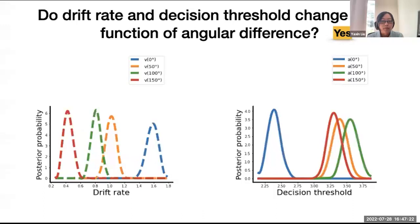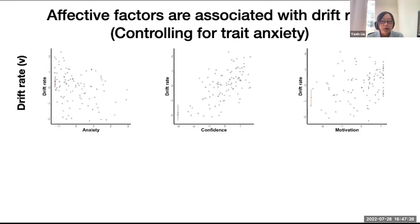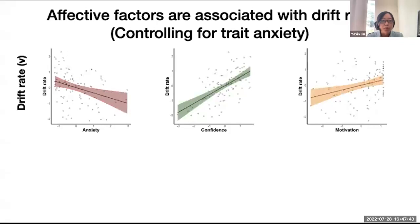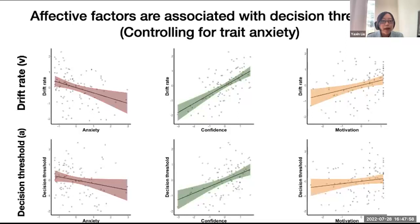Next, we regressed anxiety, confidence, and motivation on drift rates of individual participants while controlling for trait anxiety. We found that whereas anxiety was negatively associated with drift rates, confidence and motivation were positively associated with drift rates, meaning that anxiety disrupts information efficiency, but confidence and motivation seemed to enhance it. We also found a similar pattern of effects of anxiety and confidence in decision threshold, though not all associations were statistically significant.